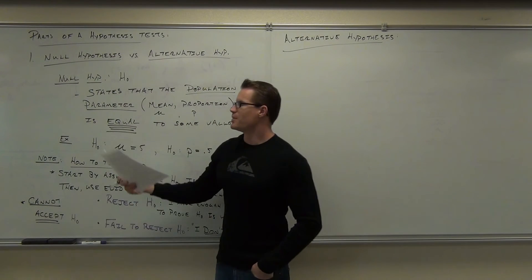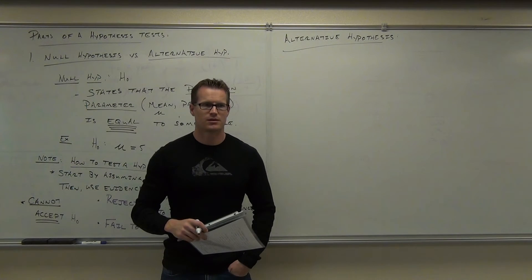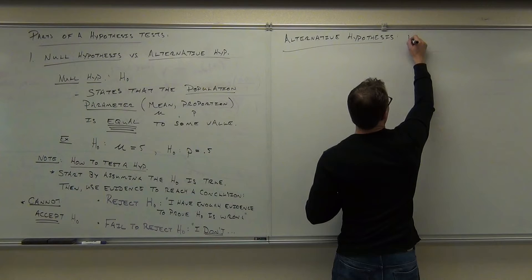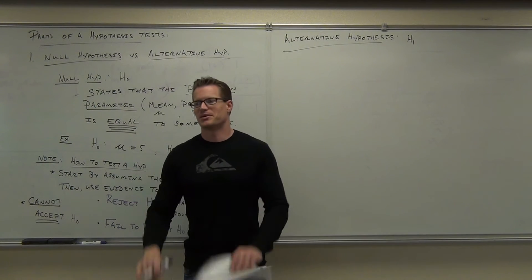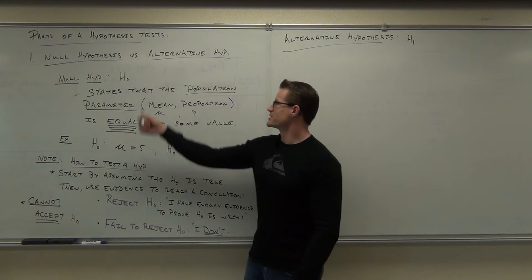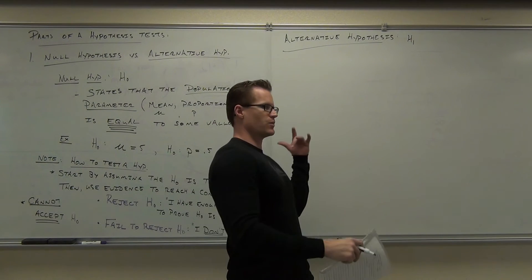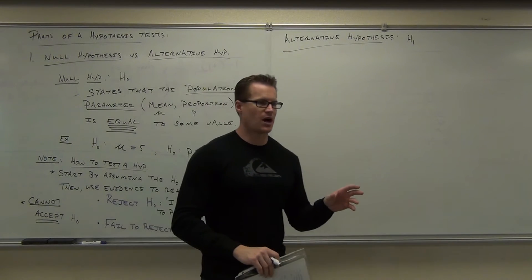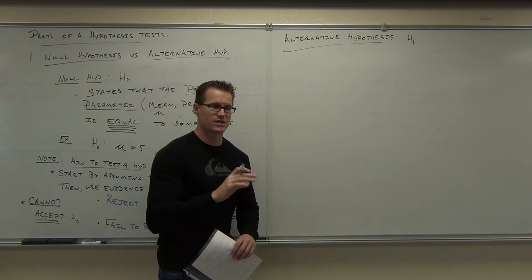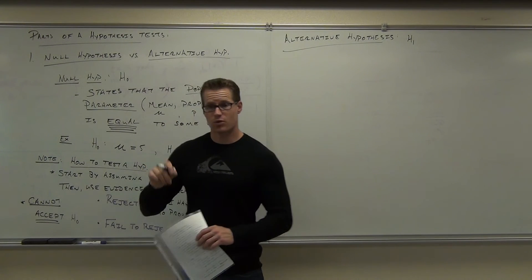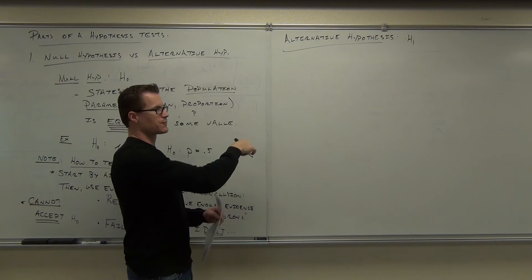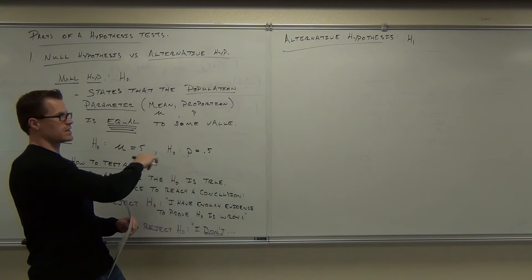If H sub zero means the null hypothesis, how are we going to write the alternative hypothesis? H sub a. Some books do use H sub a — they do H-naught and H-a. We're going to use H sub one because it just means the other hypothesis, the alternative. If you think about binary: zero, one — it's the two different options you have. There's the null hypothesis, which is the statement of equality. The alternative hypothesis is going to be the opposite statement — it's not going to have an equal sign in it.